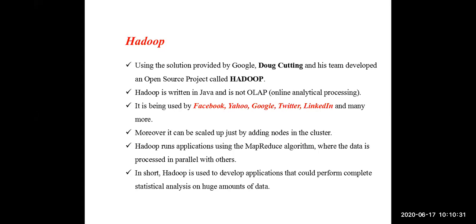Hadoop is completely written in the Java language, and it is not like OLAP — Online Analytical Processing. OLAP is a multi-dimensional analysis processing system. Hadoop is not like OLAP. This Hadoop is completely written in Java.